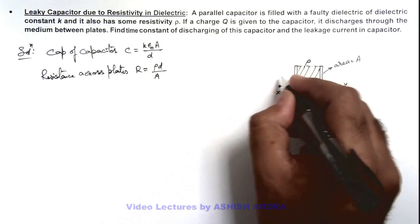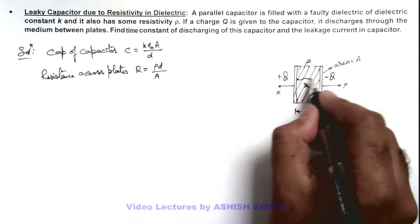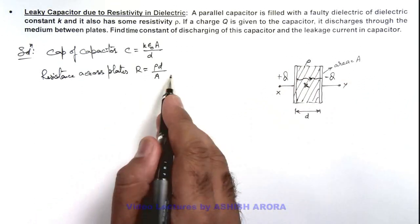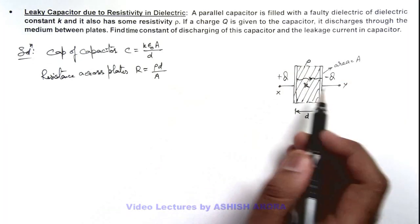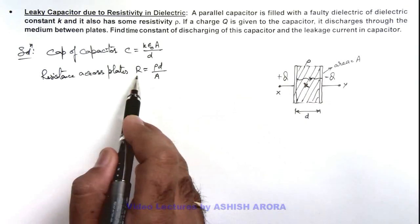Here if a charge plus Q and minus Q is given to the plates, the charge will be discharged through the conductivity of the medium or through this resistance between the plates. So we can consider this capacitor which is having a charge Q is being discharged via this resistance.